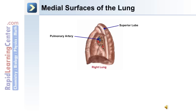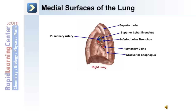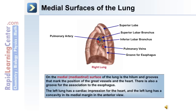In this medial view of the lungs, you can see the pulmonary artery as well as the pulmonary veins, the superior lobar bronchus and the inferior lobar bronchus. On the medial or mediastinal surface of the lung is the hilum and grooves that mark the position of the great vessels and heart, as well as a groove for the esophagus. The left lung has a cardiac impression for the heart and a concavity in its medial margin in the anterior view.